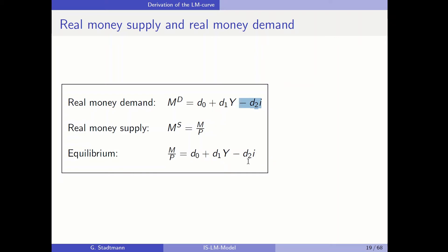When the interest rate is high, the opportunity costs of holding money are high and money demand is low. Real money supply is the ratio of nominal money supply divided by the price level. In equilibrium, real money supply must equal real money demand. In chapter four we put P on the other side of the equation and looked at nominal money supply and demand. Here in chapter five we work with real money demand and real money supply.